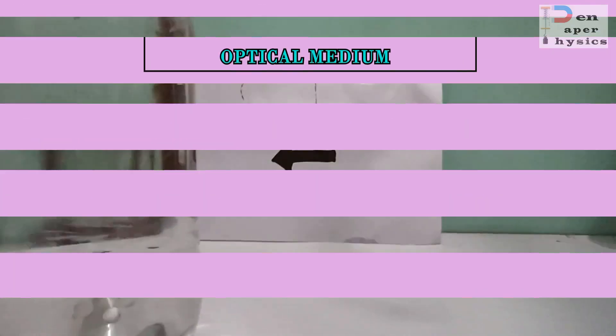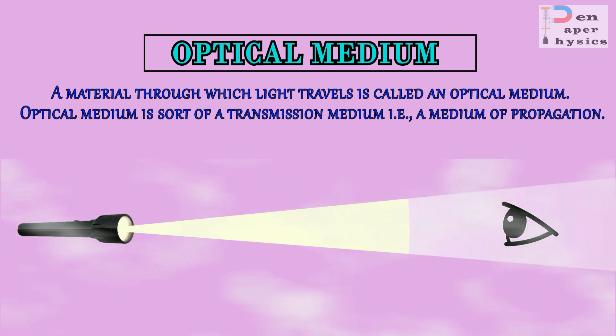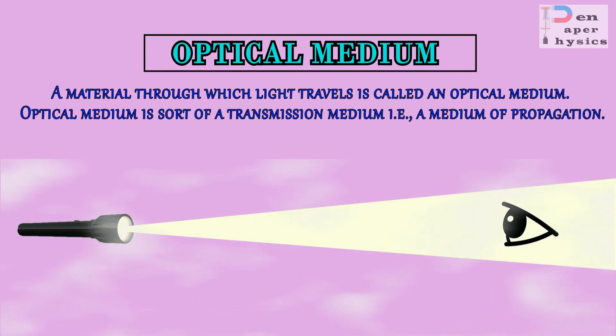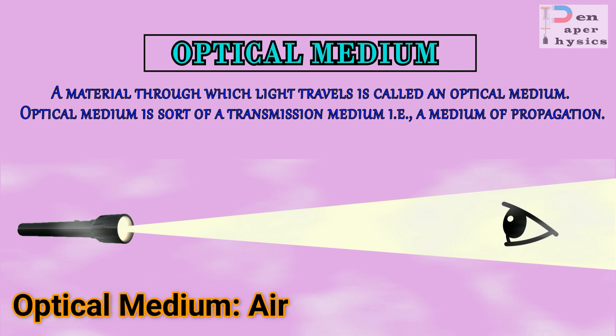Before we go into the details of refraction let us first learn about optical mediums. An optical medium is a medium or substance through which light can travel. As you can see over here I have used a torch and the light rays are reaching an eye — and the light is traveling through air medium. When you are seeing my video the light ray is reaching your eye through air medium.